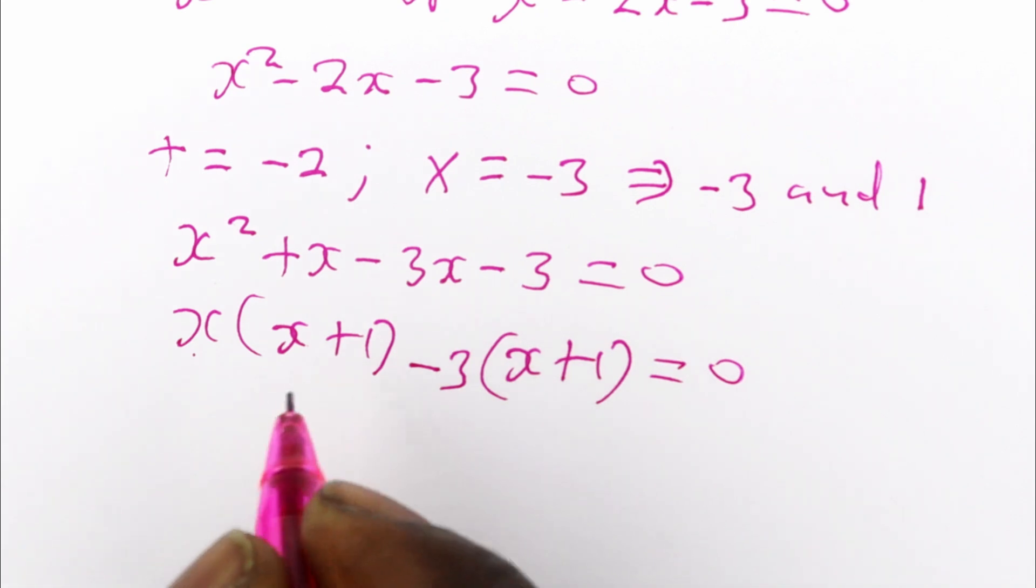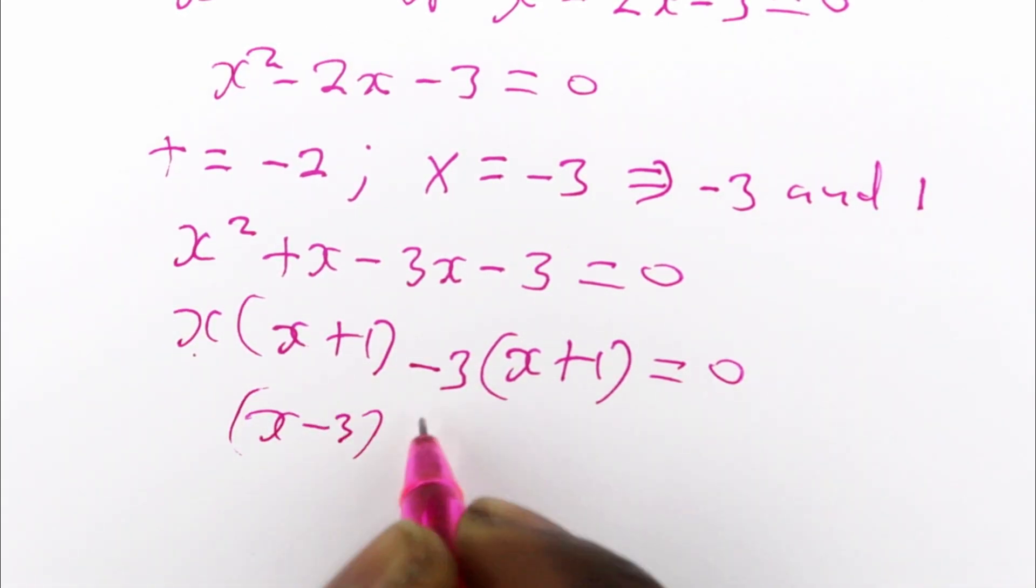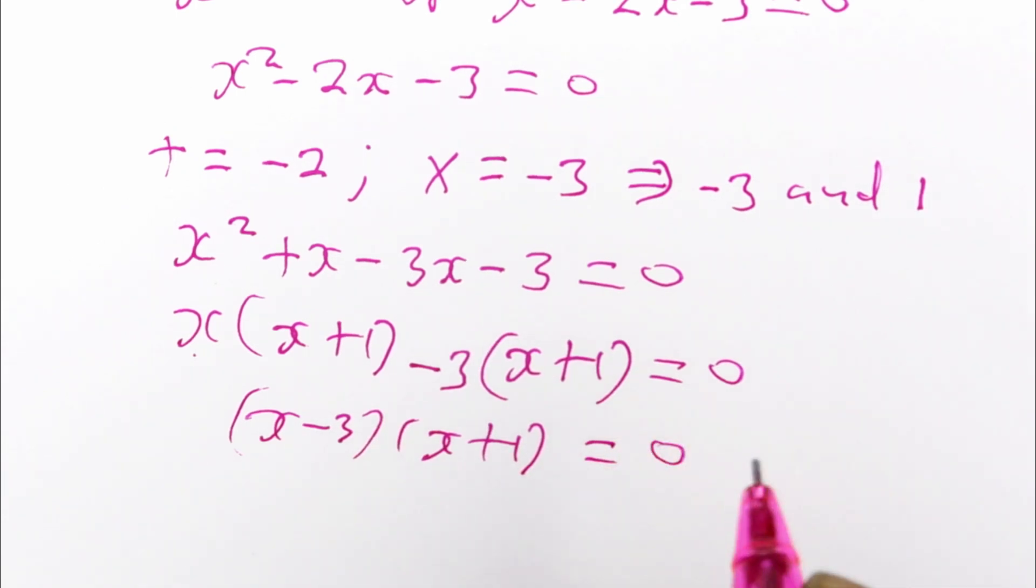So you have x minus 3 times x plus 1 is equal to 0.